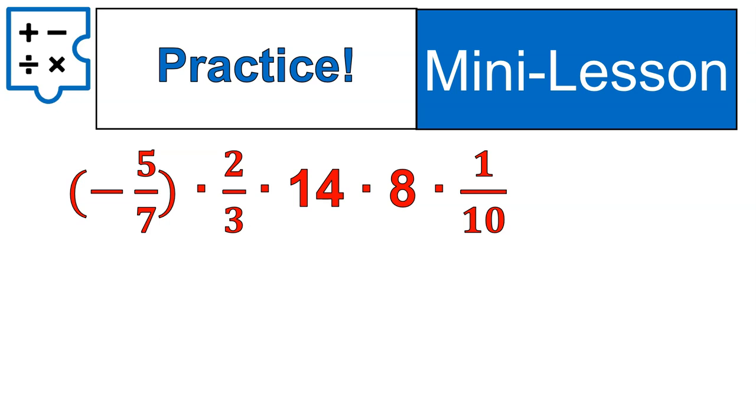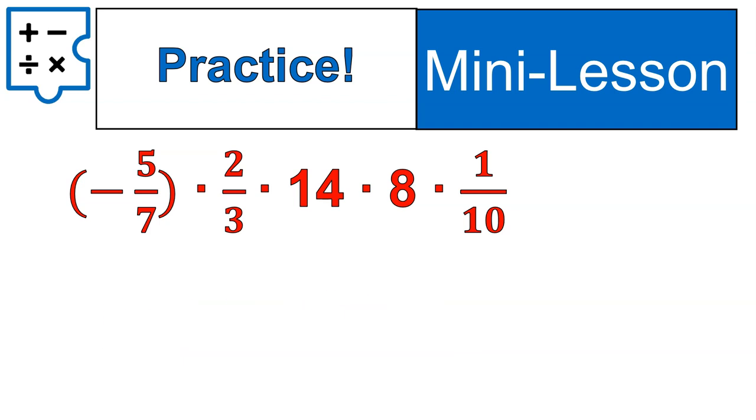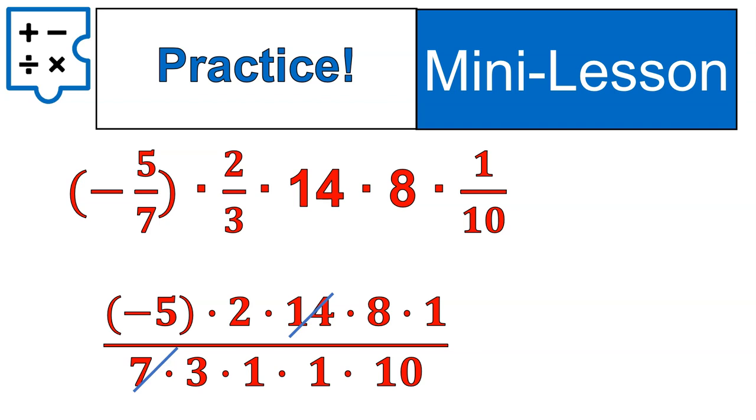All right. Here's another practice one, a little bit more complicated. Try that one out. Just realized this lesson's getting long. Oh, I apparently already canceled that out. Oops. My animation's messed up. I apologize. All right. So, if you ignore the blue lines there, we do have negative 5 over 7, 2 over 3, 14 over 1, 8 over 1, and 1 over 10.